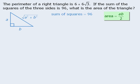To begin, let's use the information about the sum of squares of the 3 sides being 96. So if we take the 3 sides here and square them, their sum will be equal to 96.